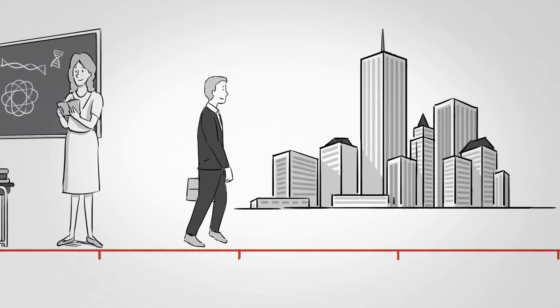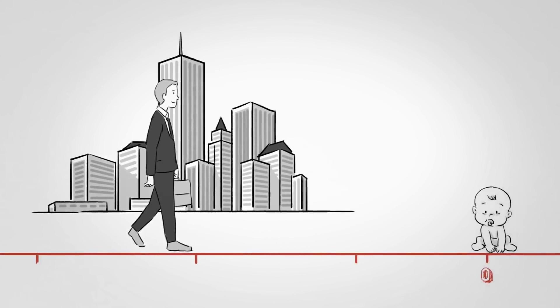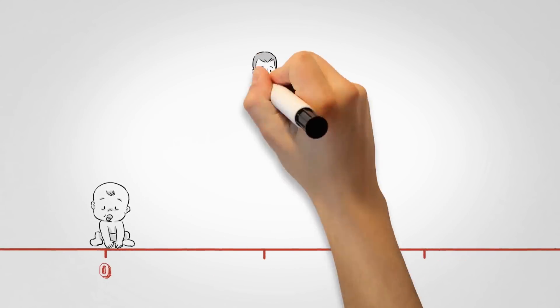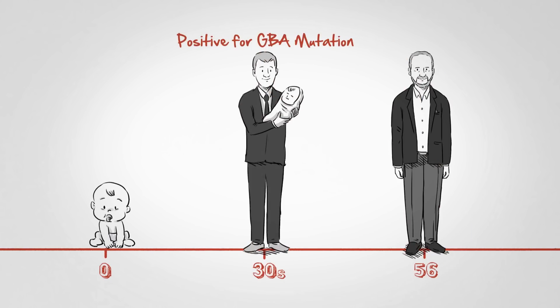After college and business school, I found my way into venture capital and spent 30 years as a high-tech investor. Based on standard genetic testing, which my wife and I did before the birth of our first child, I actually knew about my GBA mutation years before I was diagnosed with Parkinson's.